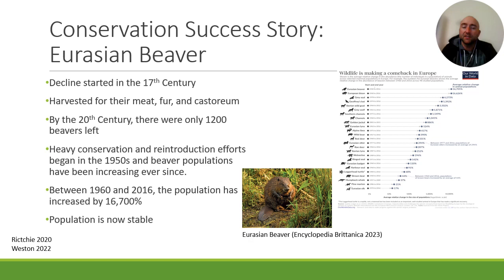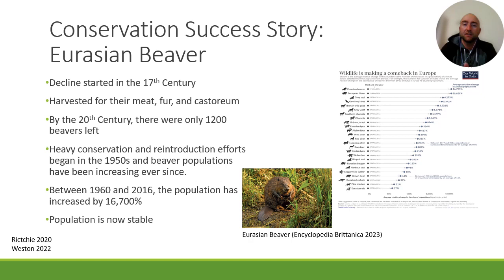The last thing I wanted to highlight is a conservation success story in Europe: the Eurasian beaver. Similarly to its North American cousin, the Eurasian beaver started declining heavily in the 17th century because of a huge market for its meat, fur, and castoreum — a gland secretion combined with urine to mark territory, also used by humans to produce food and perfumes. By the 20th century, there were only about 1,200 beavers left. But because of heavy conservation and reintroduction efforts starting in the 1950s, beaver populations have been able to stabilize. From 1960 to 2016, beaver populations increased by 16,700% — and that is not a typo.